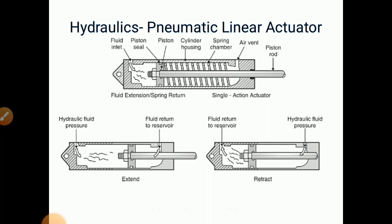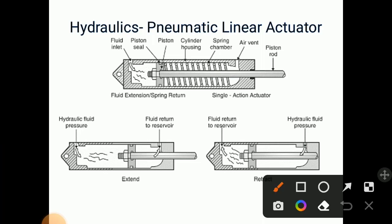So you can see here some hydraulic and pneumatic linear actuators are shown here. So how they get extended or retracted. So here you can see that because of hydraulic fluid pressure, the piston gets extended and there is one port that is floated so that fluid gets returned back to the reservoir. Similarly, if hydraulic fluid pressure is coming from this side then the piston gets retracted and this fluid gets returned back to the reservoir.